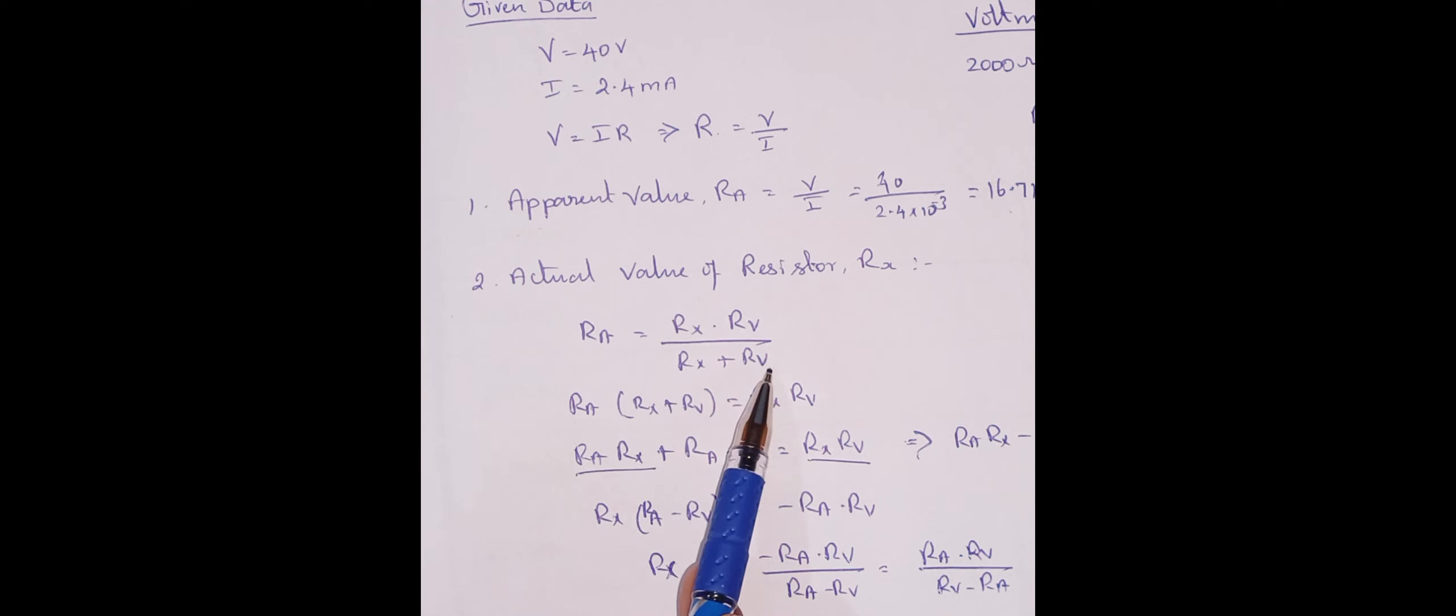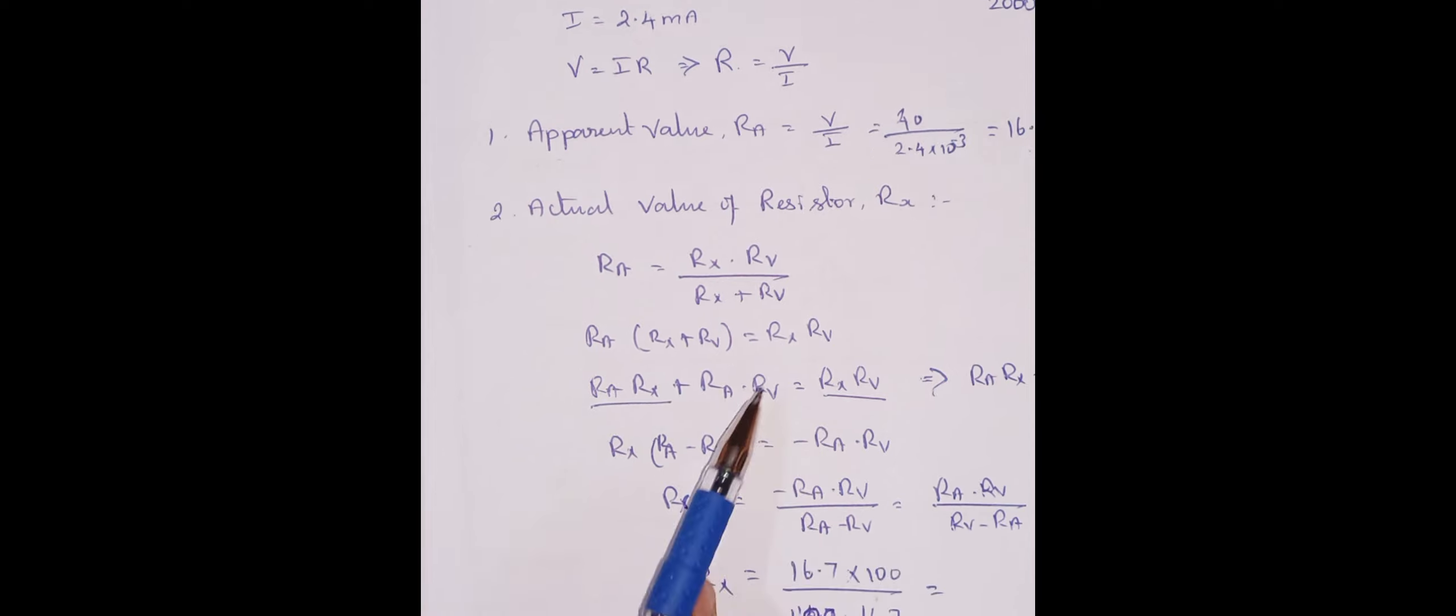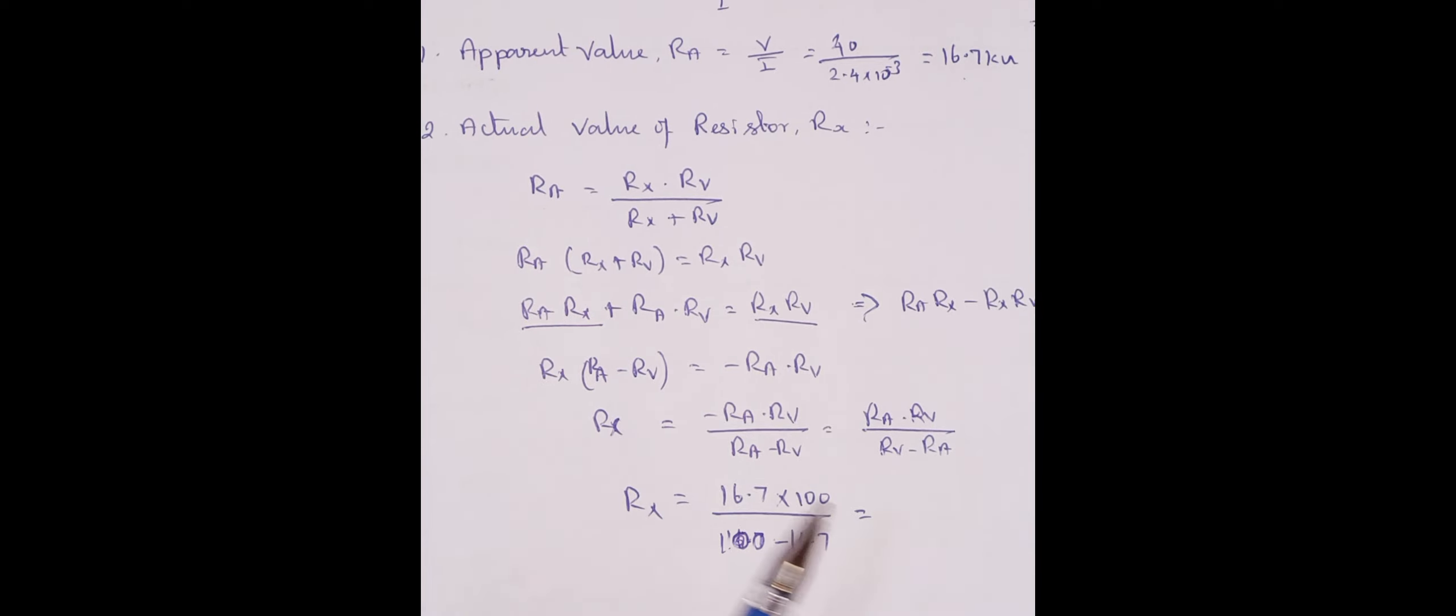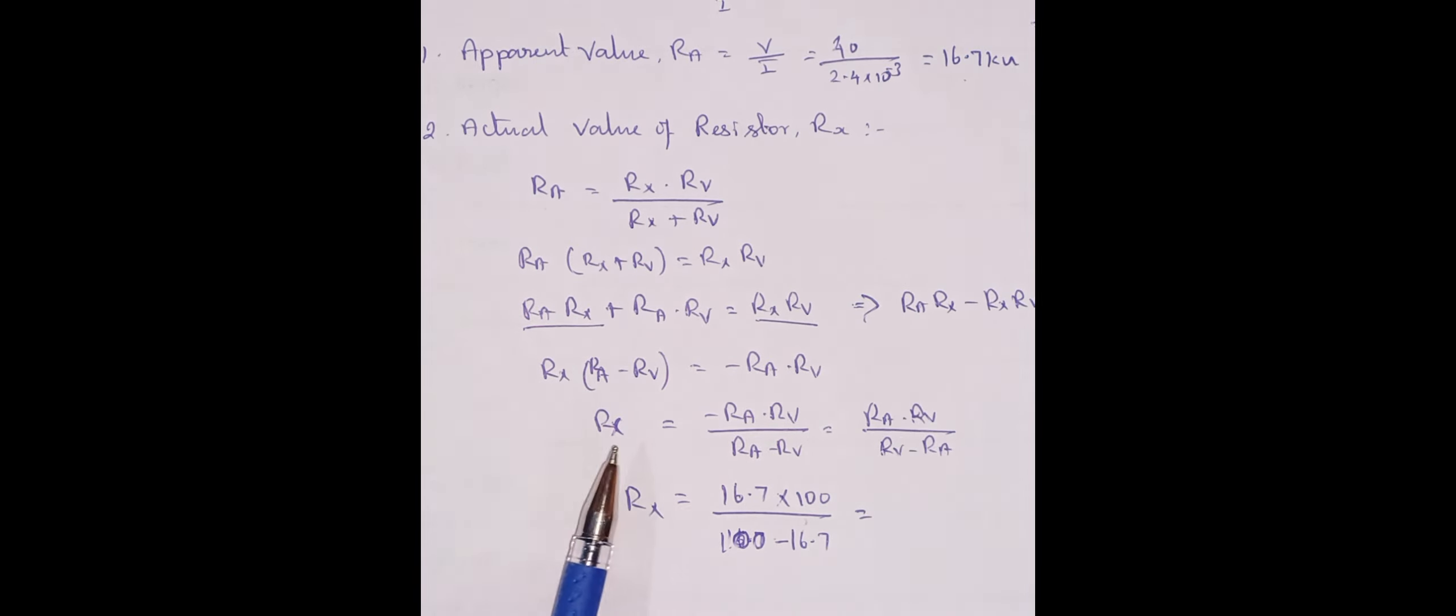So rearrange these equations, that is cross multiply and rearranging these equations. We will get, see here, Rx plus Rv and then multiplying these things rearranges. So Rx is equal to minus Ra dot Rv divided by Ra minus Rv.